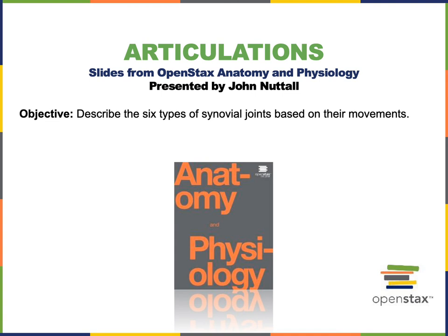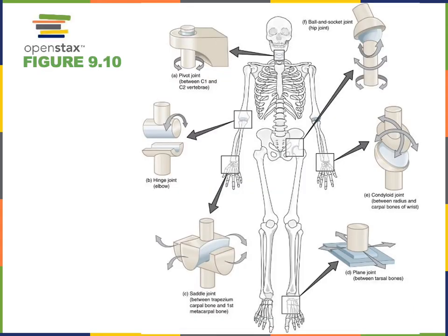In this video I will describe the six types of synovial joints based on their movements. Here in A we see an example of a pivot joint. A pivot joint allows the action of rotation and is a monoaxial joint, meaning it allows action only through one plane of motion — specifically rotation.